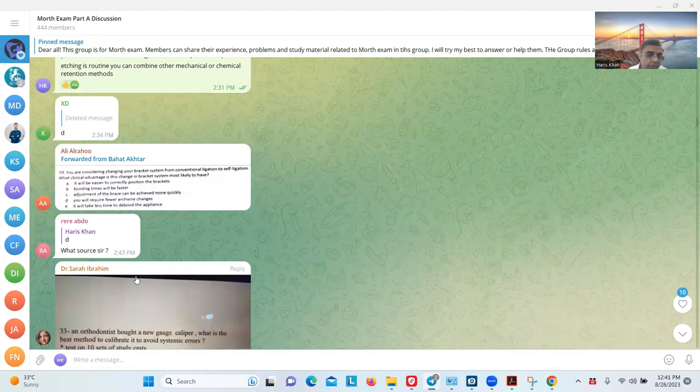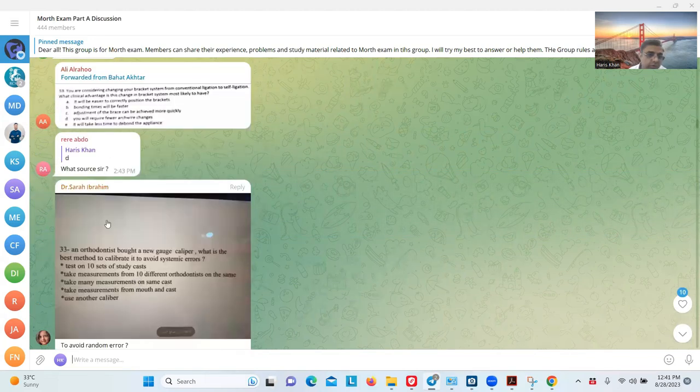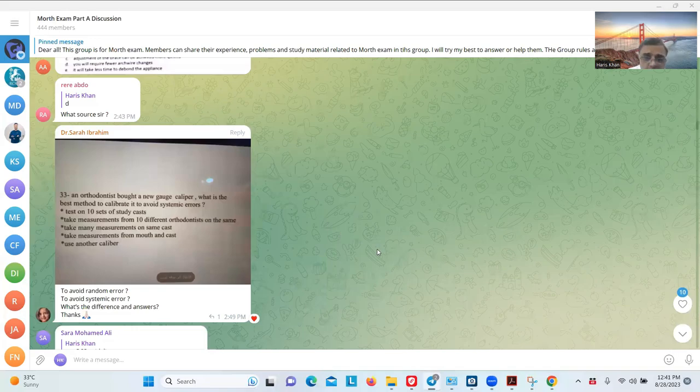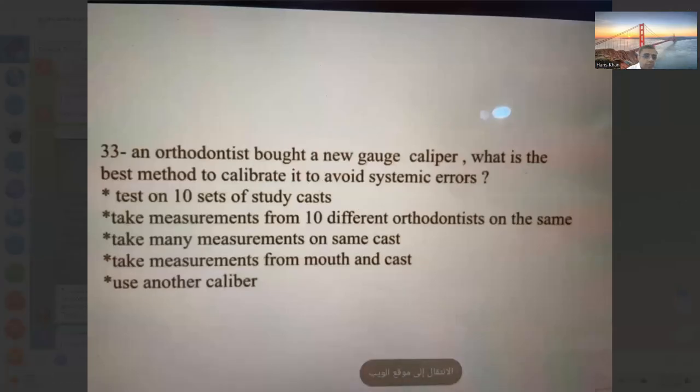I just sent the message, you can click it and you will be here. In other words, an orthodontist bought a new gauge caliper. What is the best method to calibrate it to avoid systematic errors?